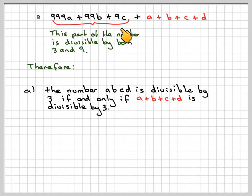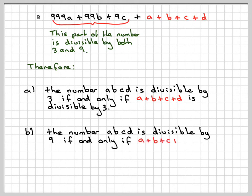If this is divisible by 9, then for the whole number to be divisible by 9, A plus B plus C plus D must also be divisible by 9. So we can say the number ABCD is divisible by 9 if and only if A plus B plus C plus D is divisible by 9.